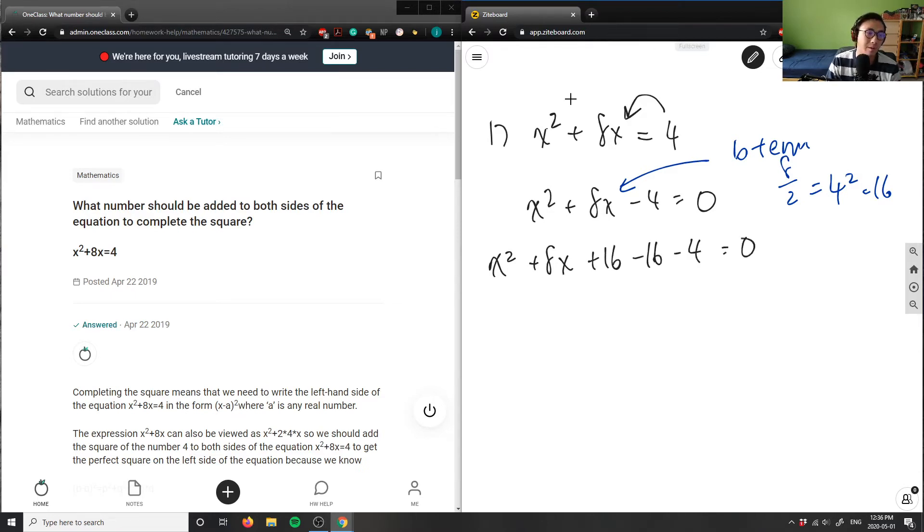My plus 16 minus 16 is simply adding zero, but this creates my perfect square trinomial. This entire thing is my perfect square trinomial, which equals (x + 4)².